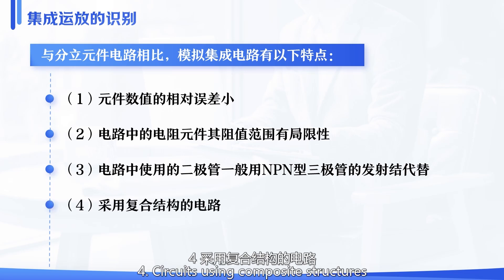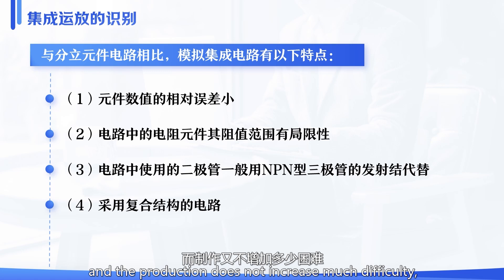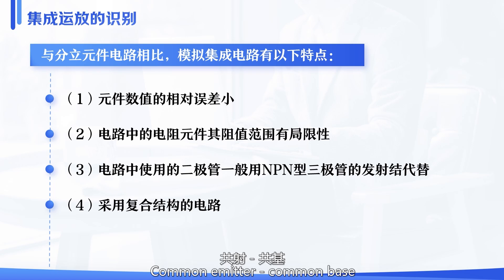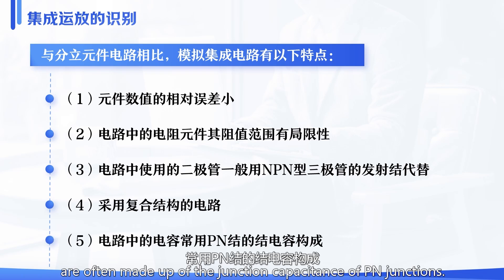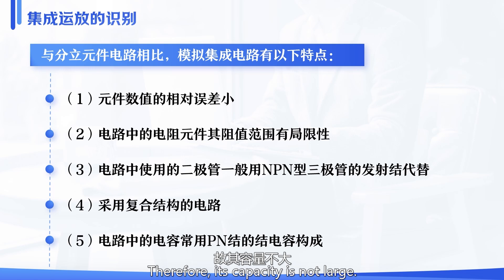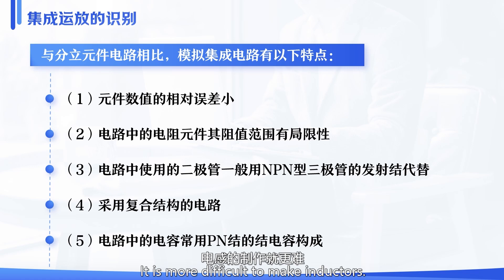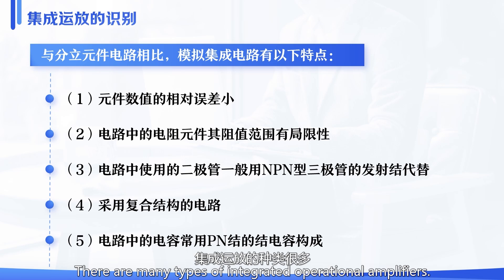Characteristic 4: Circuits use composite structures, because composite structure circuits have better performance and production does not increase much in difficulty; therefore, composite transistors are often used in integrated circuits. Characteristic 5: The capacitors in the circuit are often made up of the junction capacitance of PN junctions; therefore, their capacity is not large — generally a few to tens of microfarads. If larger external capacitor components are needed, inductors are more difficult to make, so integrated circuits all use direct coupling methods.